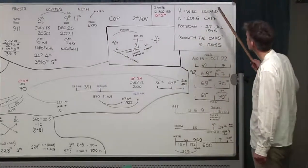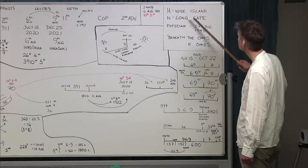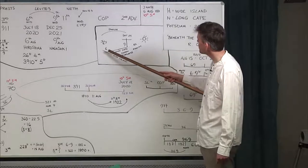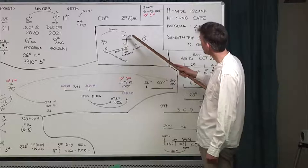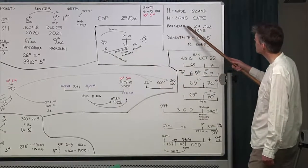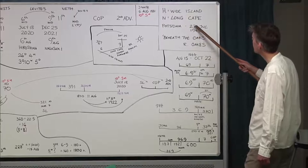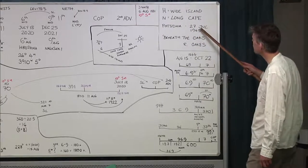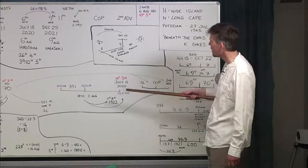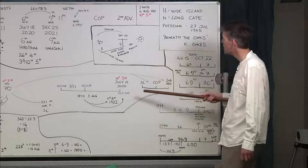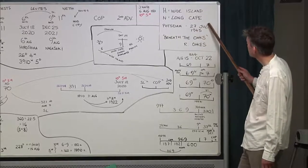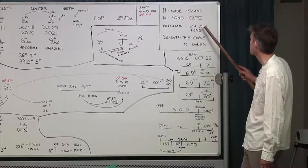The name meaning for Hiroshima is 'wide island' and Nagasaki means 'long cape.' Connecting the wide island and long cape together with the 6 and 9 gives you the shape of a cross. Potsdam, where a warning was given to Japan on July 27th, 1945, means 'beneath the oaks.' The 27th of July is a symbol of Islam, connecting to Josiah Litch's prophecy which ended on August 11th, 1840.